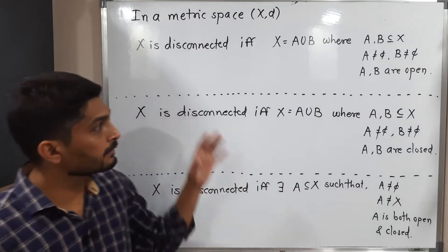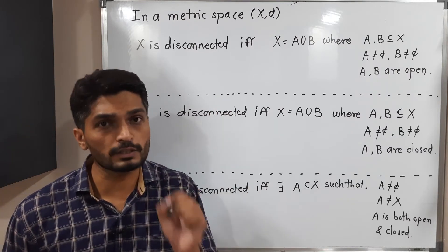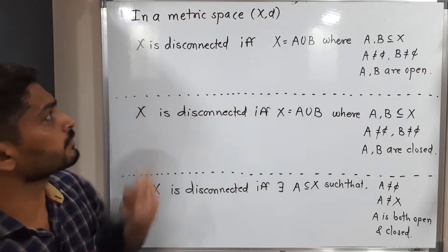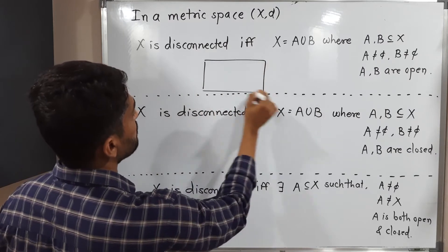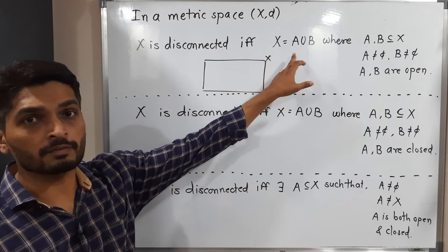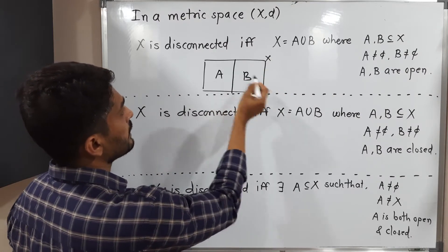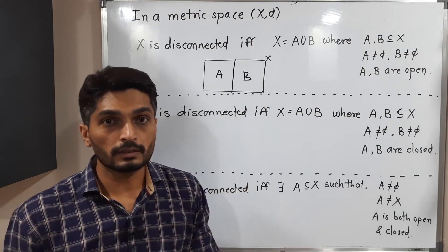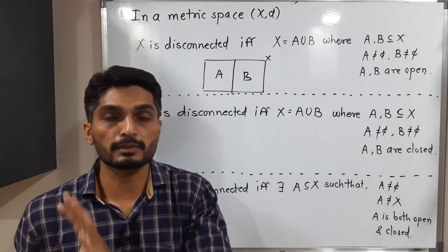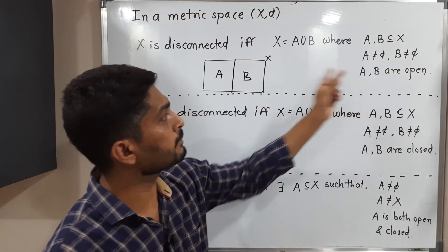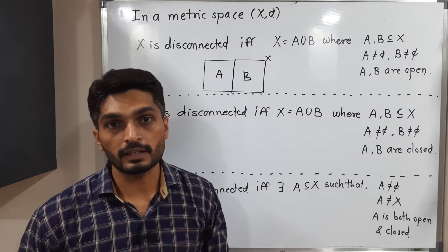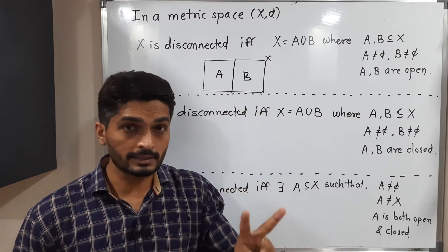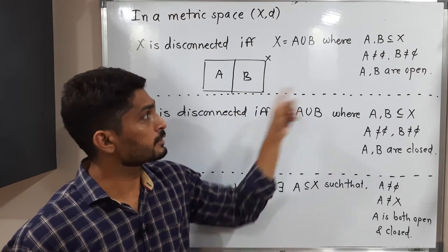Other than that definition, we have three equivalent definitions of disconnected metric space. I will draw a diagram so you can easily understand. A metric space X is disconnected if and only if it is possible to express X as A union B, where A and B are subsets of X, both A and B are non-empty, and both A and B are open sets.